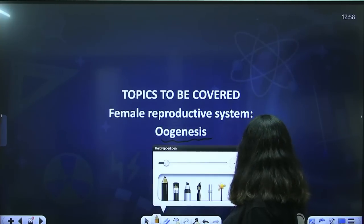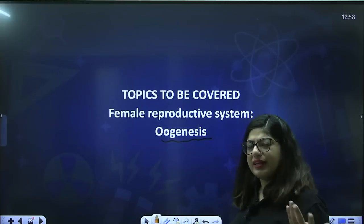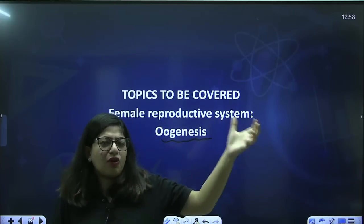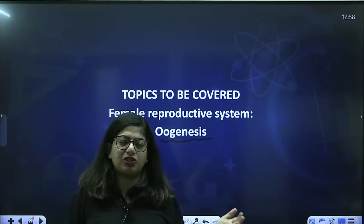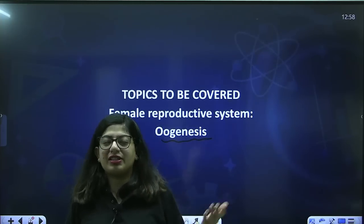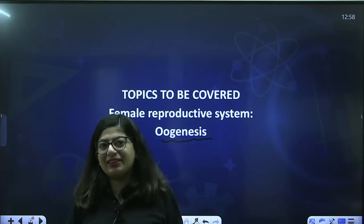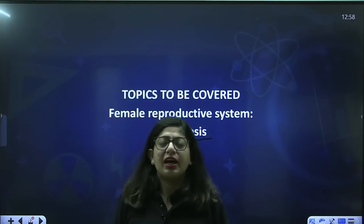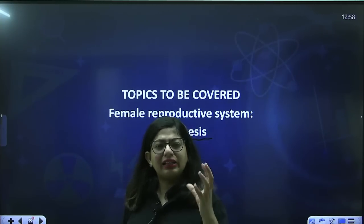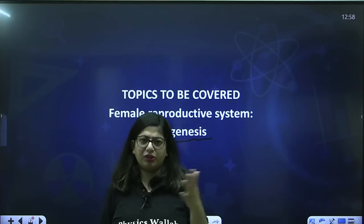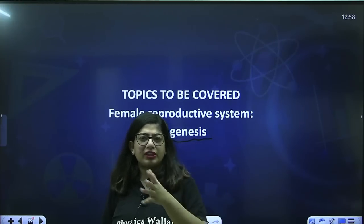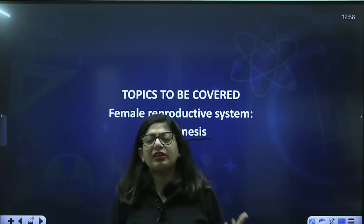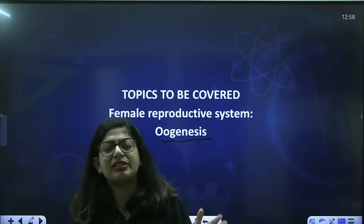Just like in humans one is male and another is female — the male gamete was sperm and its formation was spermatogenesis. Just like that, the formation of the female gamete is oogenesis. Both are slightly different from each other; most things are the same but there are certain differences we will cover in detail.